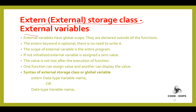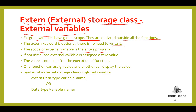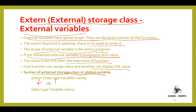Next is the external storage class, or external variables. The external storage class tells the compiler that the variable defined as extern is declared with external linkage elsewhere in the program. External variables have a global scope — they are declared outside all functions. The extern keyword is optional. The scope of an external variable is the entire program. If not initialized, the external variable is assigned a value of 0, and the value is not lost after function execution. One function can assign a value and another can display it. Syntax: extern <data_type> <variable_name>.